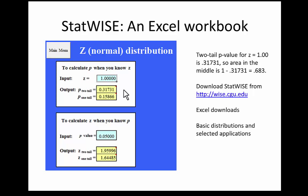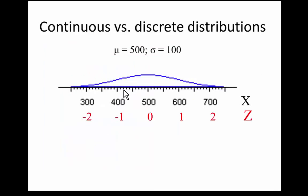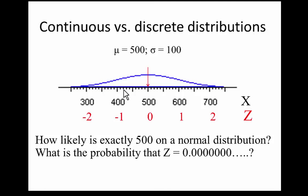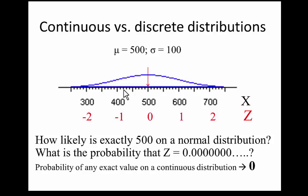Another option is to use tables, which you can find in the back of most introductory statistics books. The distinction between continuous and discrete distributions can be very important. The normal distribution is a smooth, continuous distribution. The probability of any exact value on a continuous distribution approaches 0 — it's vanishingly small. So then how can we use a normal distribution to find probabilities?